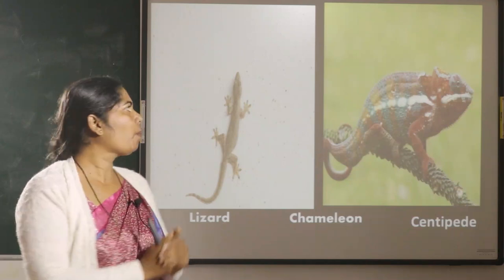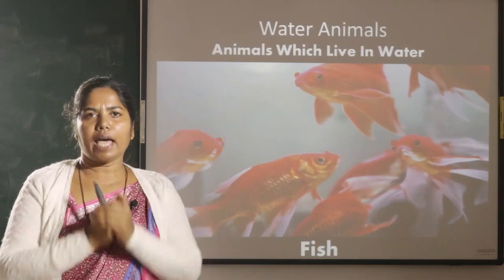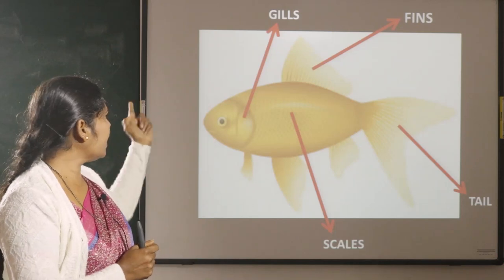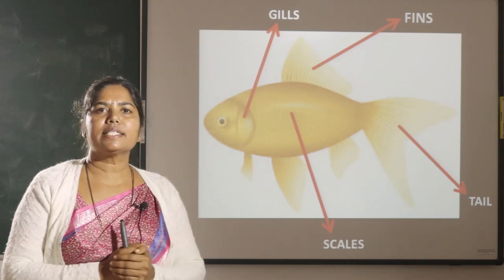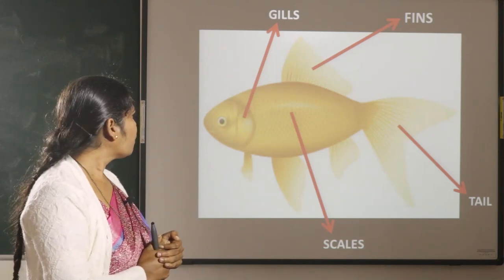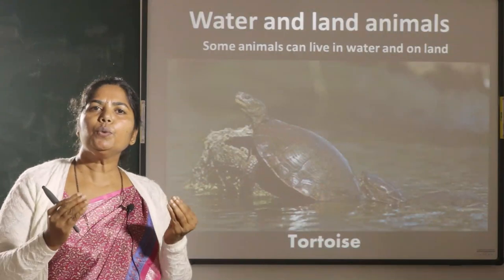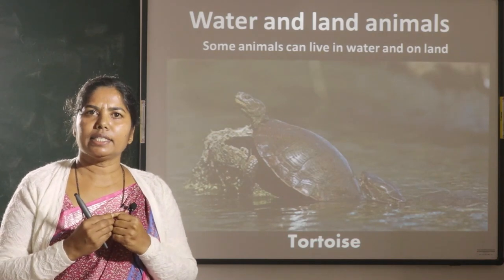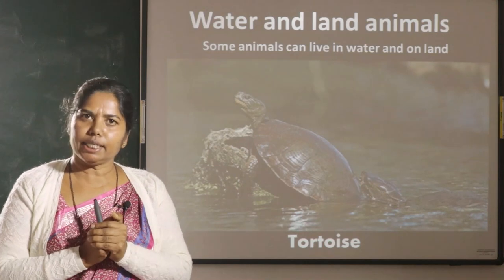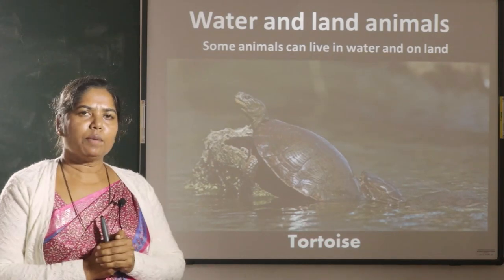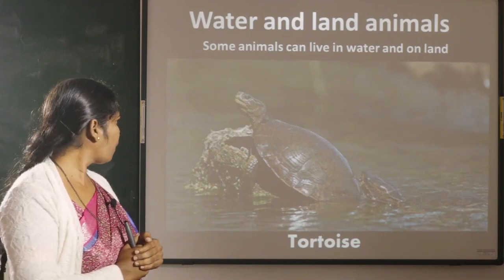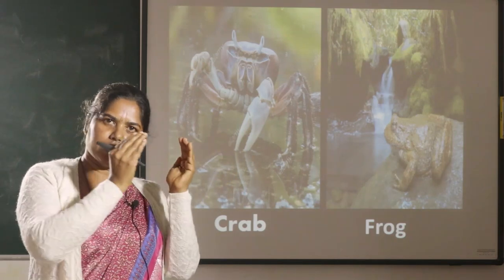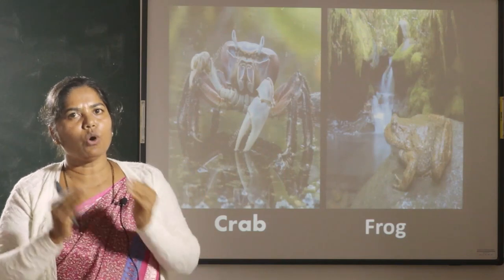Now let us move to fish — water animals. Fish lives in the water. They have gills, fins, scales and a tail. Fish is used as a food. It is very, very good for health. So every day we have to eat fish. Some other water animals are tortoise, crab and frog. These animals live in the water as well as on the ground.